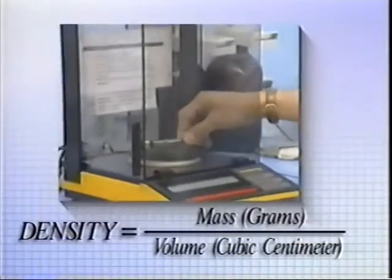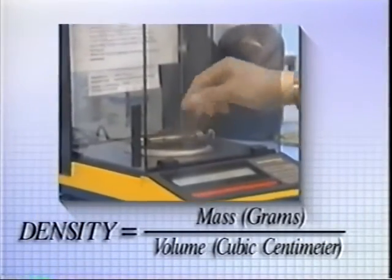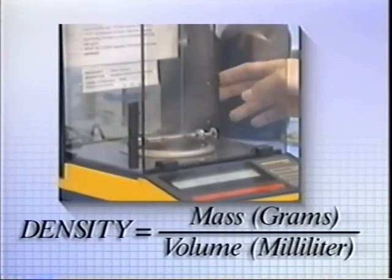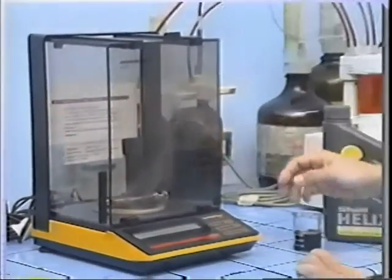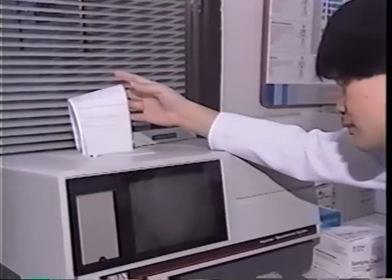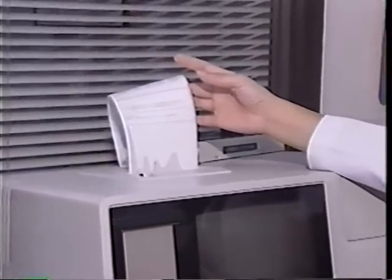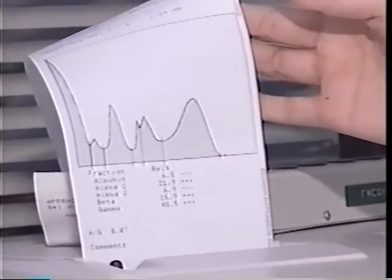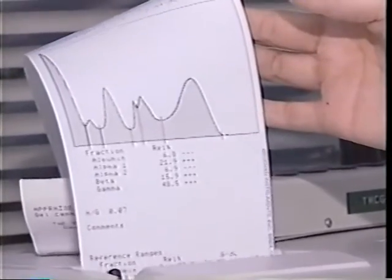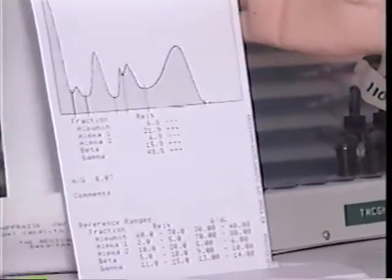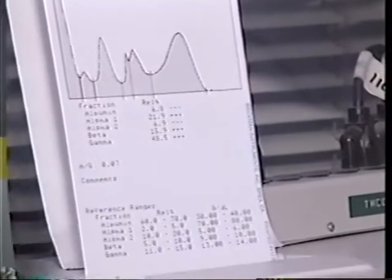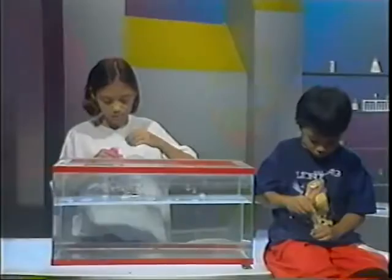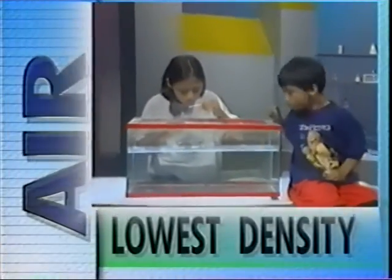Density can be expressed in grams per cubic centimeter or grams per milliliter. Unlike mass and volume, density is an intensive property — it does not change with the size of the sample. That is why density can be used to characterize a given substance. Let's look at samples of substances, each with their own density.